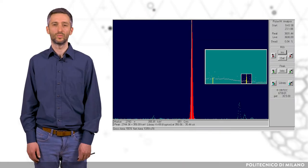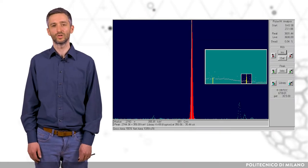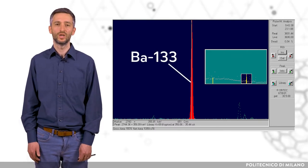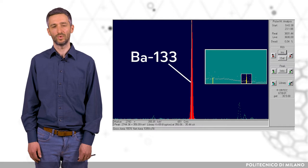Different radionuclides can be present in these matrices, but what is common to them is that they are either alpha, beta, and/or gamma emitters. This governs the method of their qualitative determination. Gamma spectrometry is a powerful, non-destructive technique which can determine numerous gamma emitters simultaneously without the need to separate them chemically.